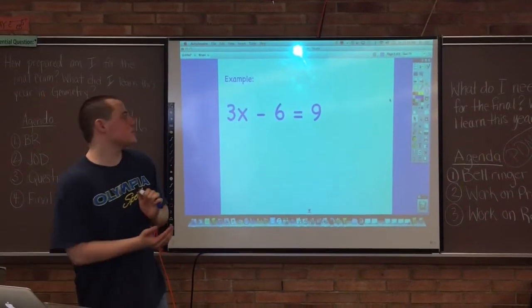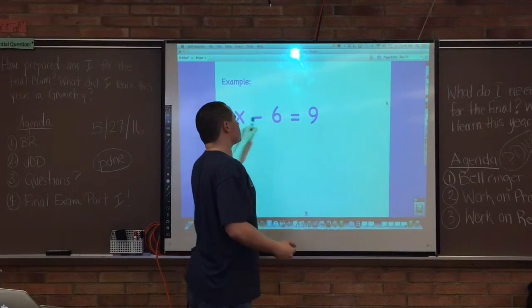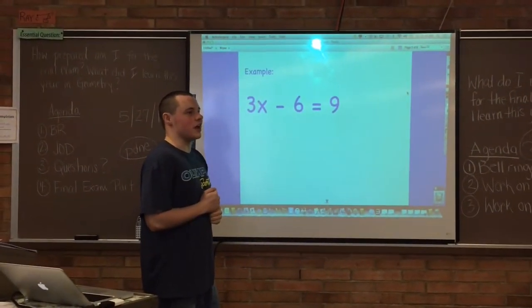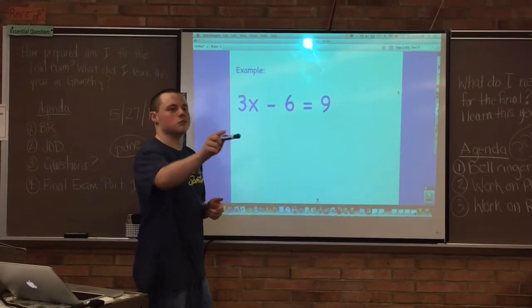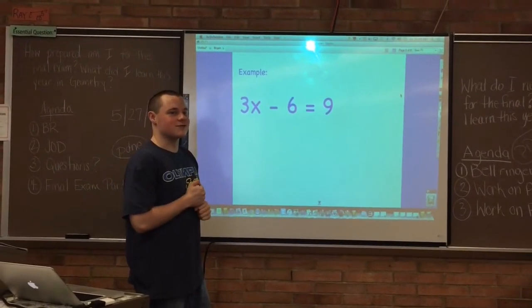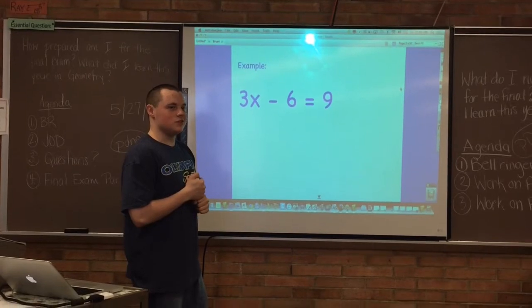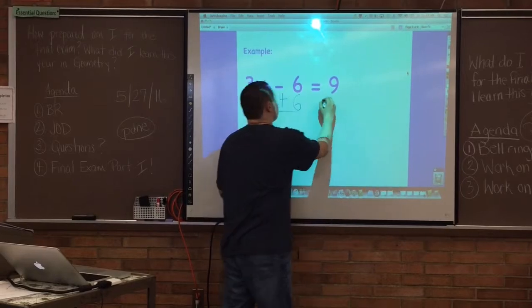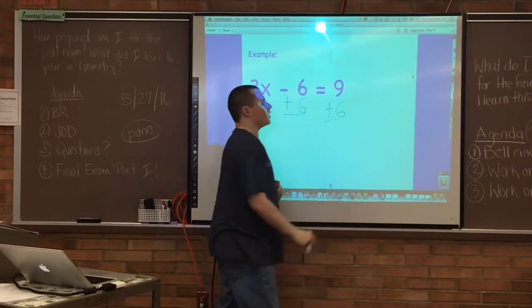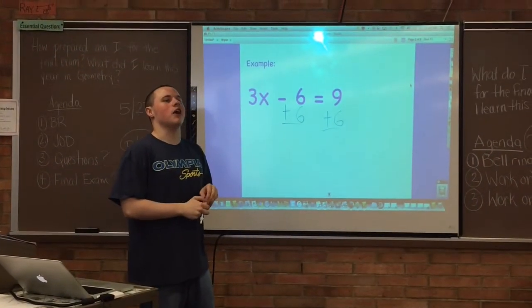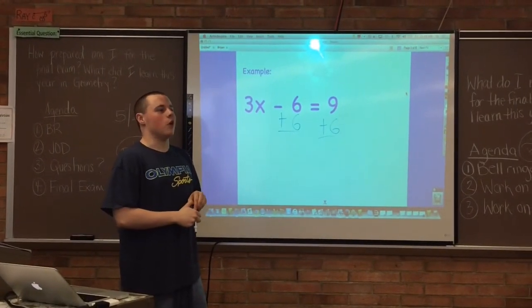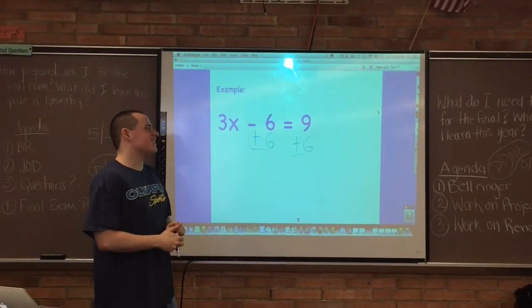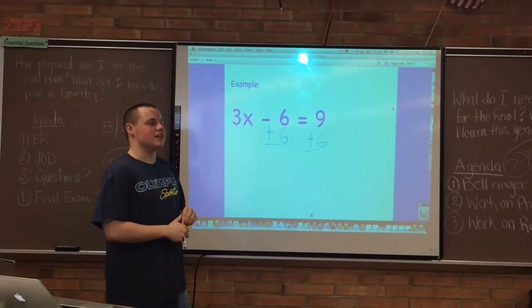And now, here's an example. Three x minus six equals nine. So what do we start first? Raise your hand. Don't yell out. Renard. You do add six. Yes, that is right, my friend. Okay, so now what? Tyrell. Divide three. No. What is the next step? Yes, you continue on. Oh, you add nine.